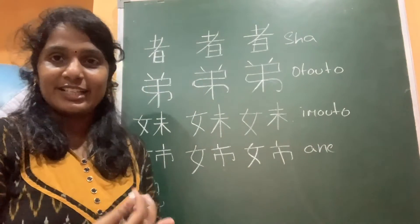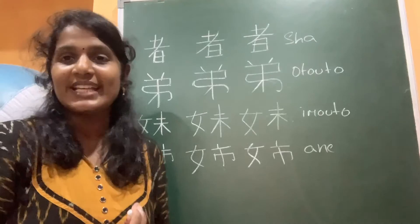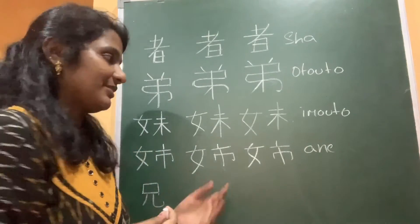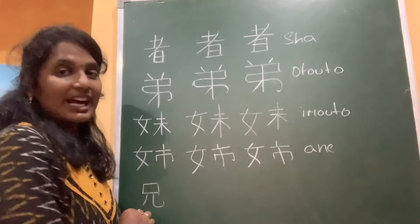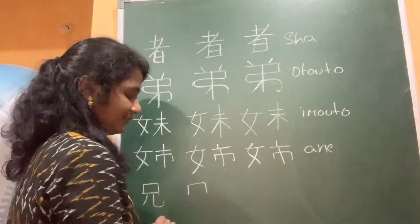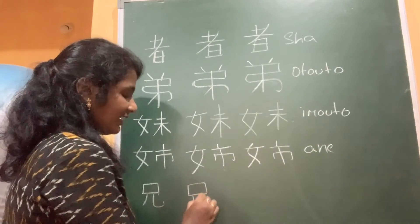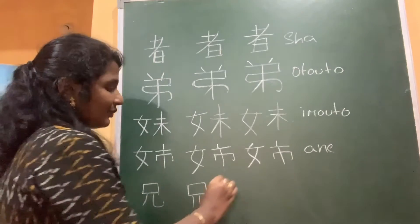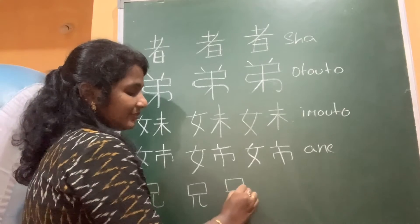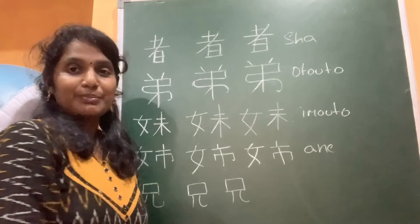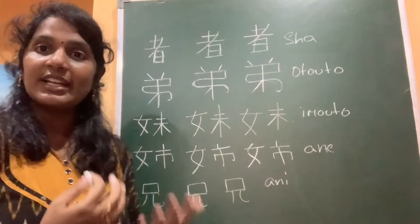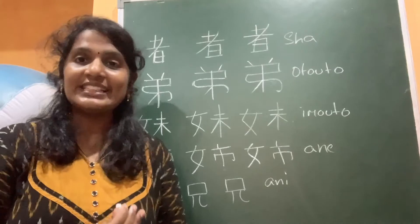If you are referring to someone else's elder sister, then it is onee-san, which is the formal way of expressing your respect. And this is ani, 'my elder brother', written in five strokes: one, two, three, four, and five. If you are referring to someone else's elder brother, then it is onii-san.